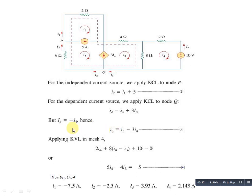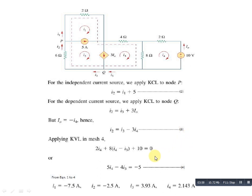Then, applying KVL in mesh 4 — this is a simple mesh with no common current source, so no super mesh condition is needed. Applying KVL gives: 2I4 + 8(I4 − I3) + 10 = 0, which simplifies to equation 4: 5I4 − 4I3 = −5. Comparing equations 1, 2, 3, and 4, the results are: I1 = −7.5 A, I2 = −2.5 A, I3 = 3.93 A, and I4 = 2.143 A.